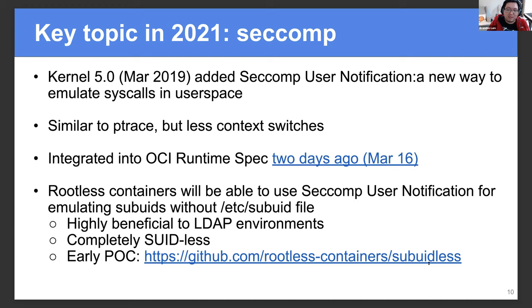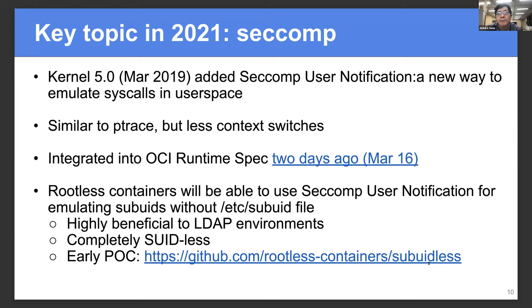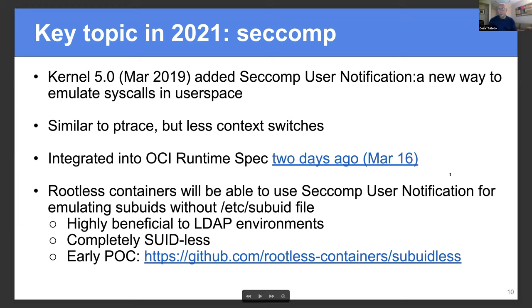I just wanted to ask - you said you wanted to get more experiments on seccomp? What kind of experiments are you looking for? It'll be great if we can get some experiments on the overhead of this syscall user notification. So you're looking for performance data. In the Sysbox runtime, we use this mechanism quite a bit to intercept certain system calls. It is very useful because we can select the specific system calls we want to intercept. For example, we intercept the mount system call because it's very important that whenever procfs or cgroupfs are mounted inside one of these rootless containers, it is our emulated procfs and cgroupfs that gets mounted, not the kernel's procfs, otherwise you create a security hole.